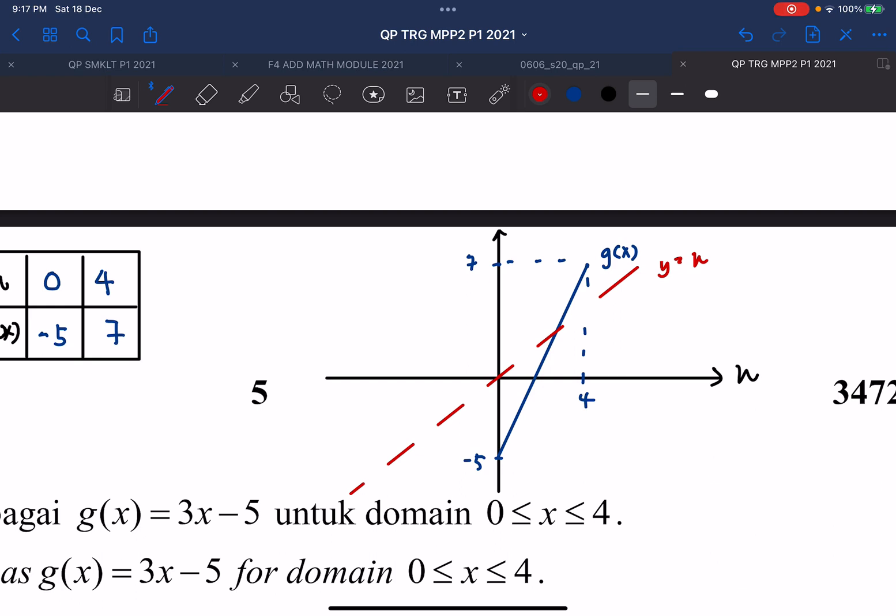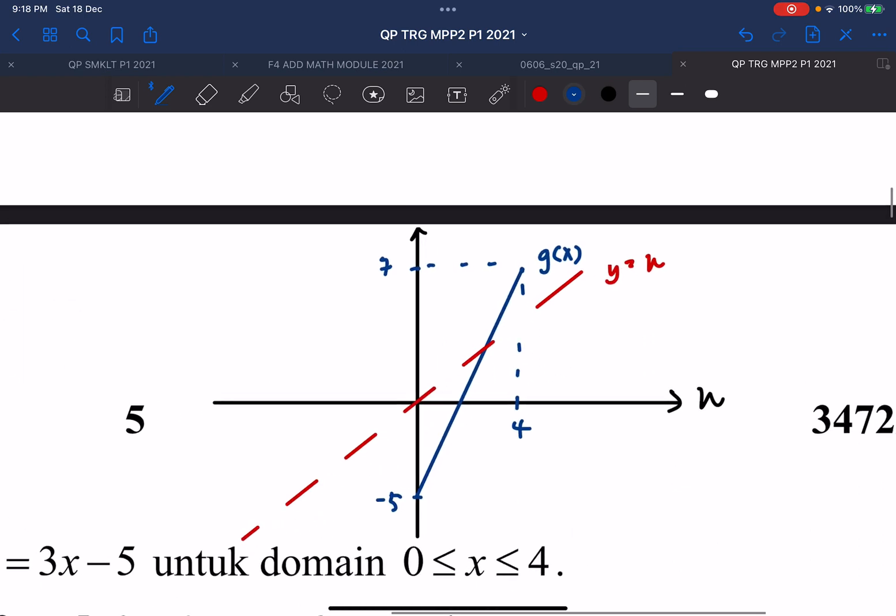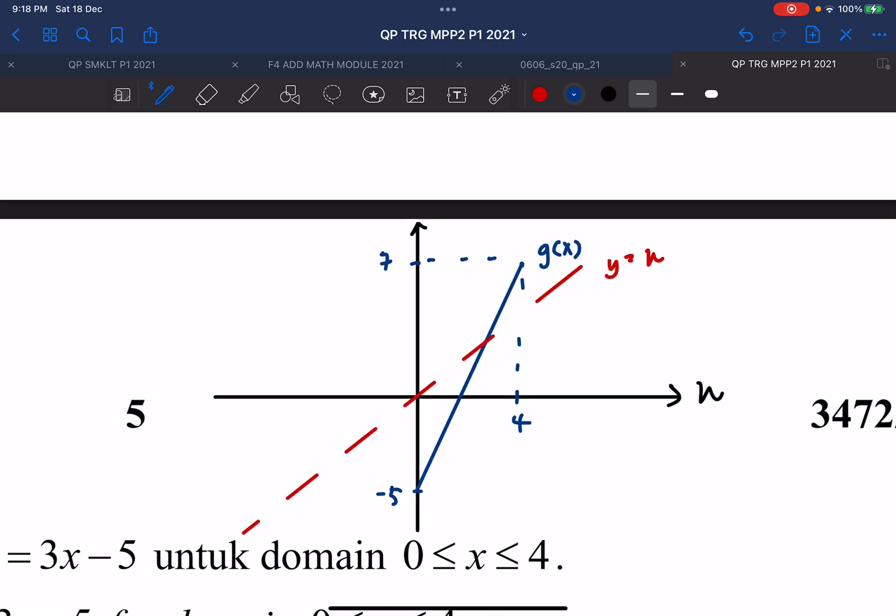And when you reflect, your coordinates will also be reflected. So your y-intercept for your G function is actually negative 5. So it will be changed into your x-intercept for your G inverse function. So negative 5 is your y-intercept, it will be changed to x-intercept. So x-intercept will be negative 5.